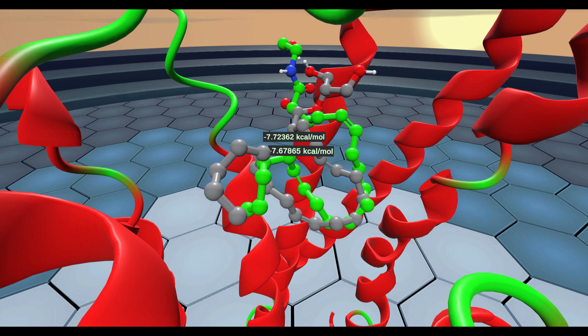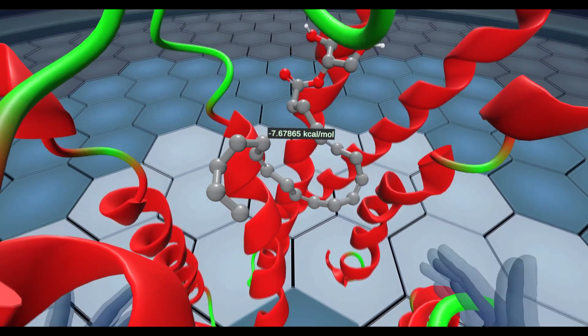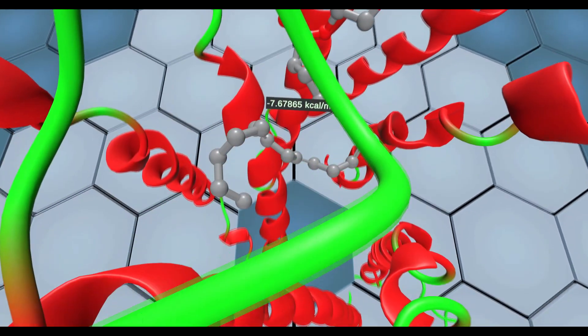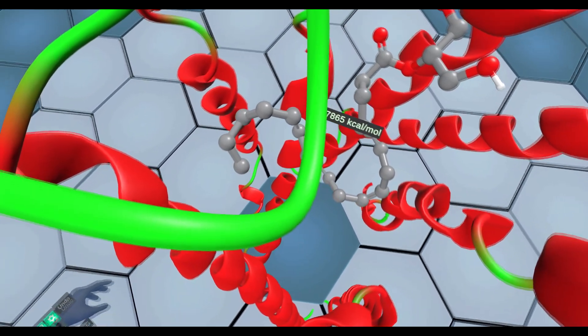If we take away anandamide, we can see the docked pose of 2-arachidonylglycerol by itself. Once again, this bends inside the receptor like a snake to fit inside the orthosteric binding pocket.